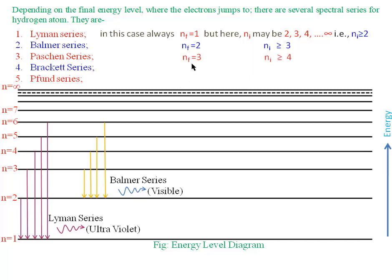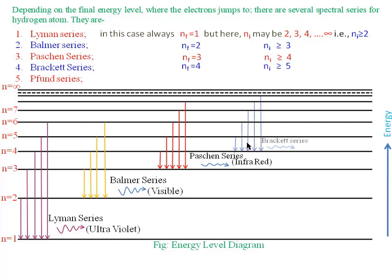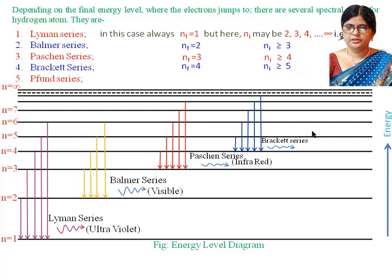When nf equals 3 and ni is greater than or equal to 4, we get the Paschen series, which lies in the infrared region. When the final energy level is 4, that gives the Brackett series. Finally, when the final energy level is 5, electron transitions to that level form the Pfund series.